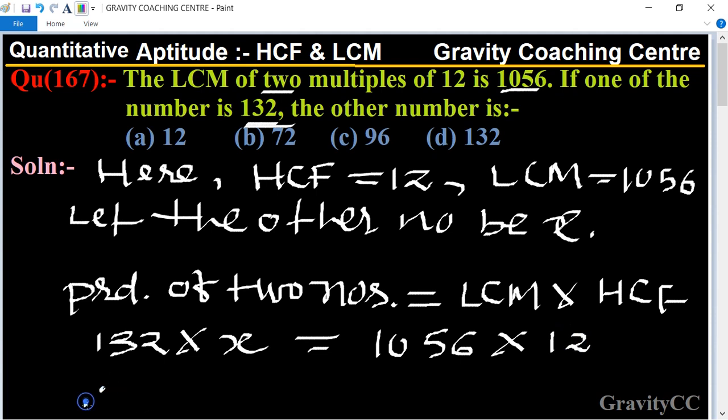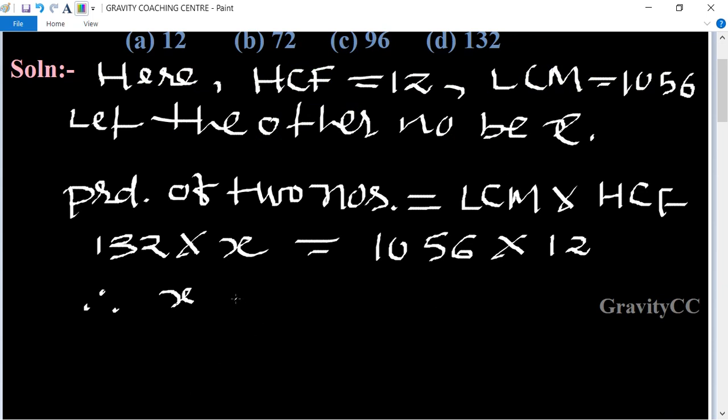Therefore, x equals (1056 times 12) divided by 132. Simplifying by canceling common factors, we get 1056 divided by 11.